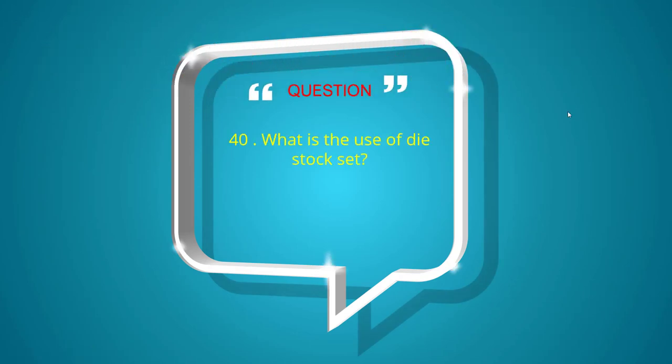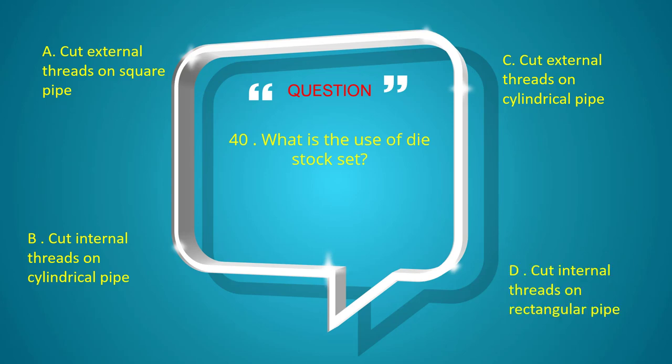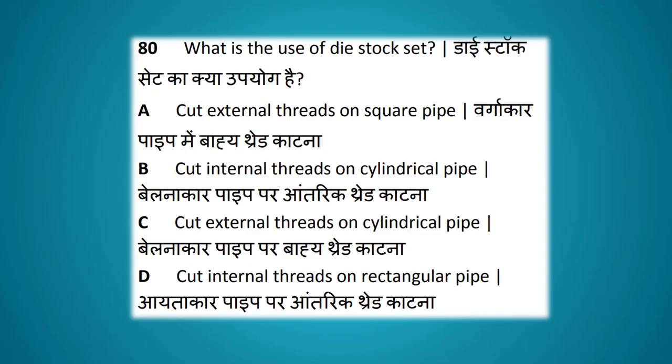What is the use of a die stock set? Options: cut external thread on square pipe, cut internal thread on cylindrical pipe, cut external thread on cylindrical pipe, cut internal thread on rectangular pipe. The answer is cut external thread on cylindrical pipe.